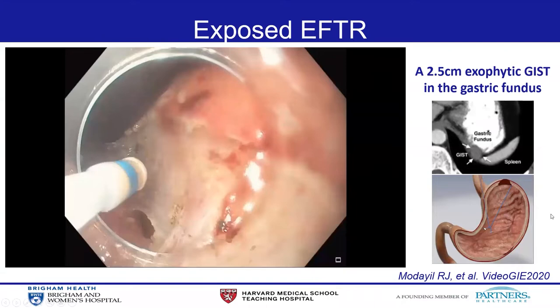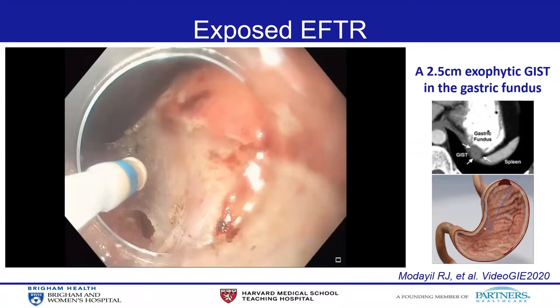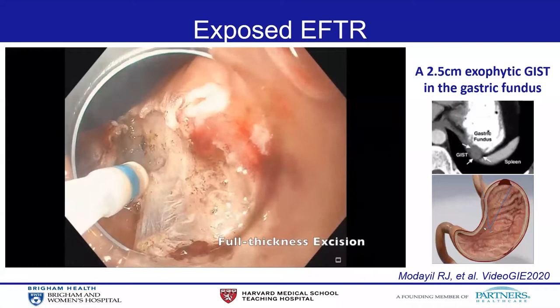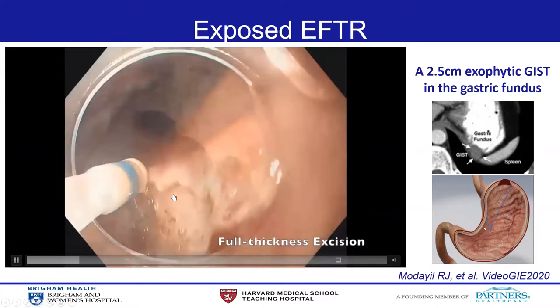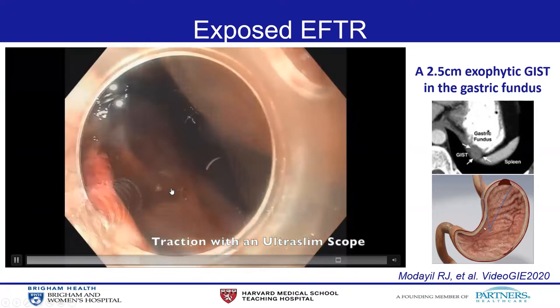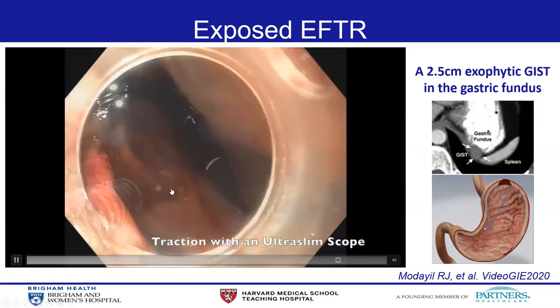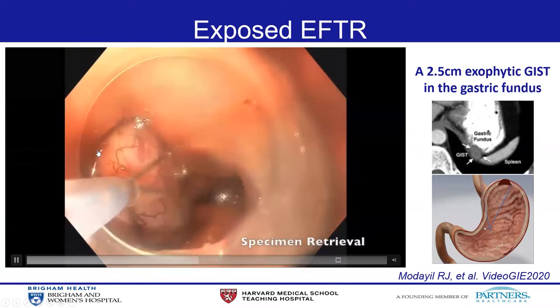I'm going to show a case video of a 2.5 centimeter GIST in the gastric fundus with exophytic growth. This case is not a good candidate for non-exposed EFTR because of the size — larger than 2 centimeters — and because of the exophytic growth pattern. First, the periphery of this lesion was incised in a full-thickness fashion. Then, using a grasper, the target lesion was pulled back into the stomach and passed to the other grasper with an ultra-slim scope. Using a hook knife, the lesion was completely removed en bloc.